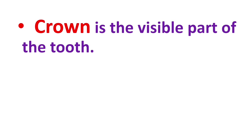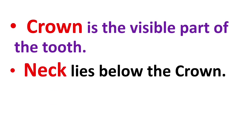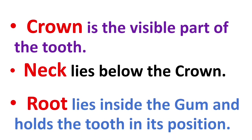First we will talk about crown. Crown is a part of the teeth that is visible to us. Neck lies between crown and roots. And the root lies inside the gums and holds the tooth in its position.